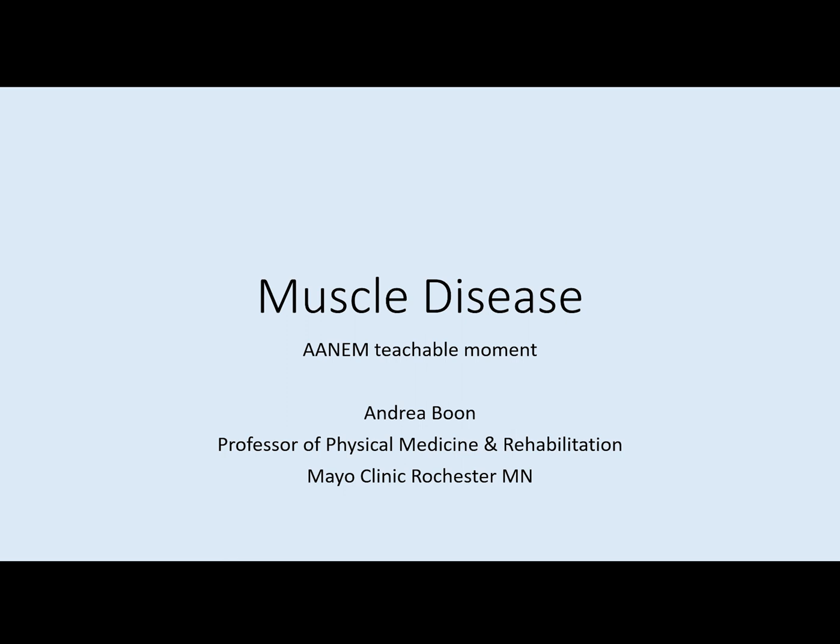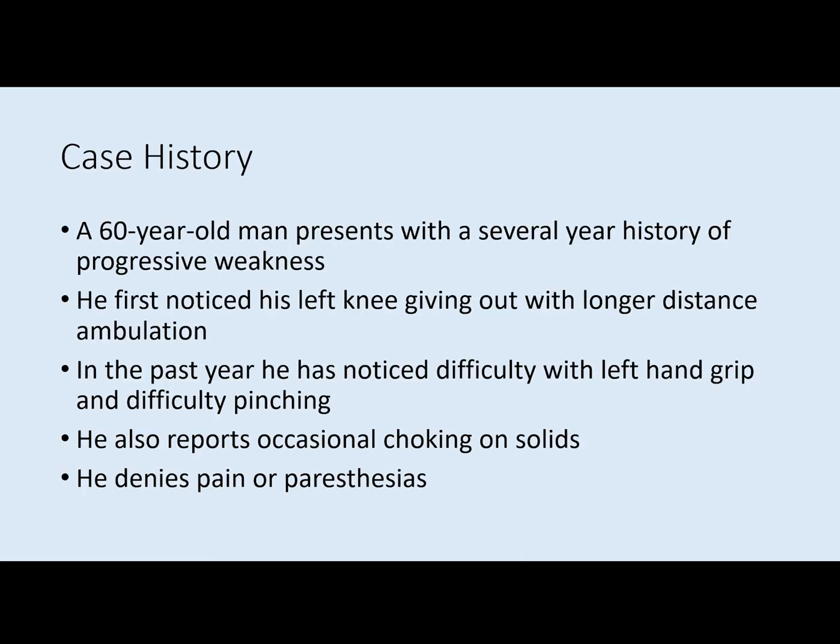This is an AANEM tangible moment focusing on muscle disease. This is a case of a 60-year-old man presenting with several years of progressive weakness. He first noticed his left knee giving out when he would walk long distances, but over the past year he's also having trouble with his left hand with some weakness and notes occasional choking on solids. He has not had any pain or paresthesias.